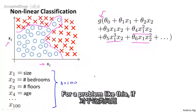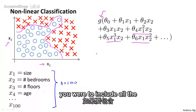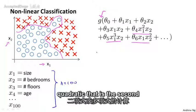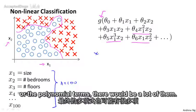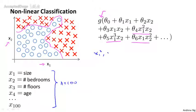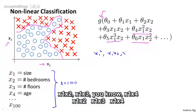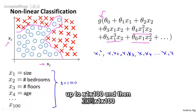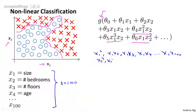For a problem like this, if you were to include all the quadratic terms, even all the second order polynomial terms, there would be a lot of them. There would be terms like x1 squared, x1 x2, x1 x3, x1 x4, up to x1 x100. And then you have x2 squared, x2 x3, and so on.